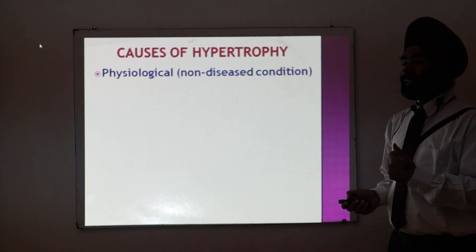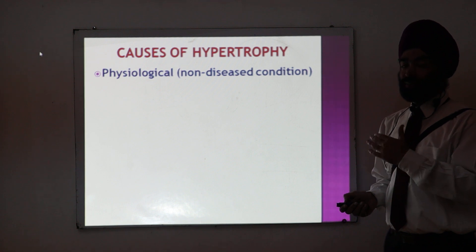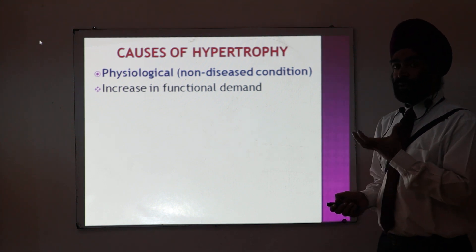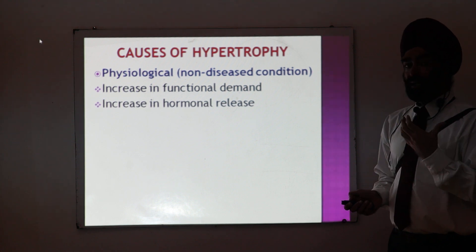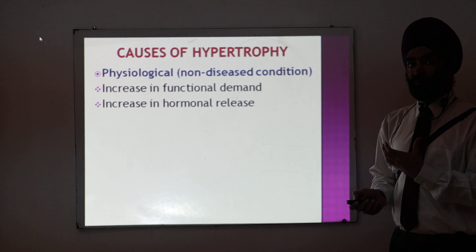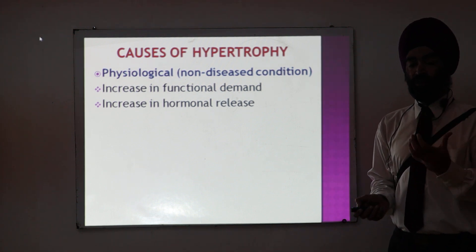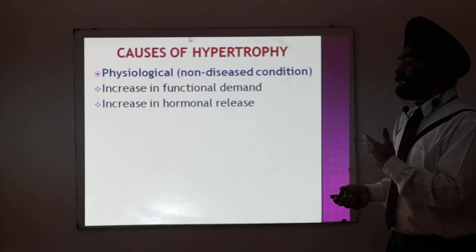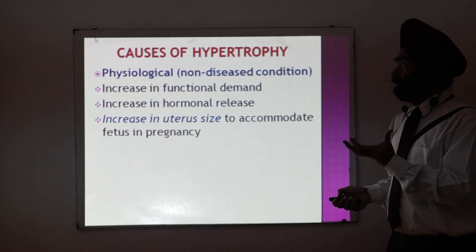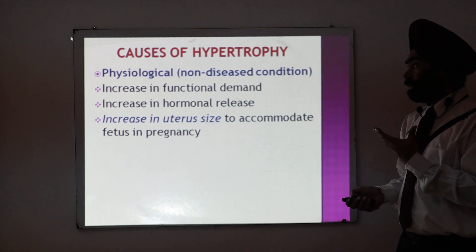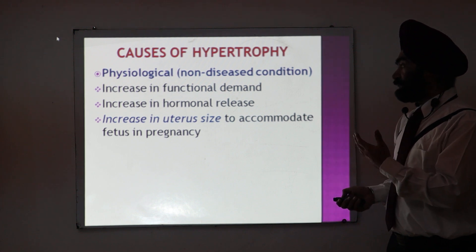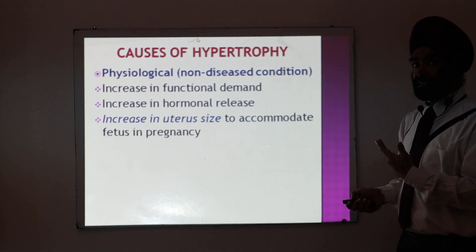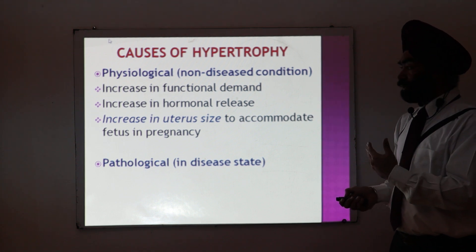I will discuss two types — first, physiological (non-diseased) hypertrophy. One important reason is increased functional demand. As I mentioned with atrophy, if you don't use muscles they shrink; conversely, if you take a lot of work from muscles, like a person who exercises regularly, the muscles develop — that is hypertrophy. Also, increased hormonal release causes cells and organs to increase in size. An example is the increase in uterus size during pregnancy to accommodate the fetus — this is physiological hypertrophy.